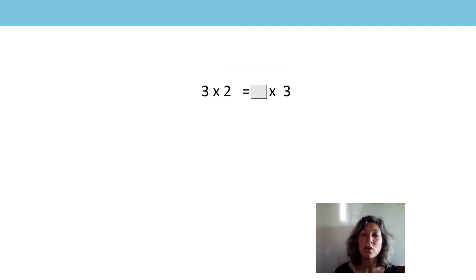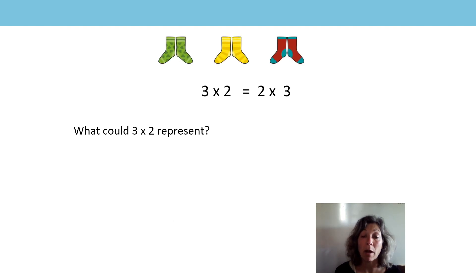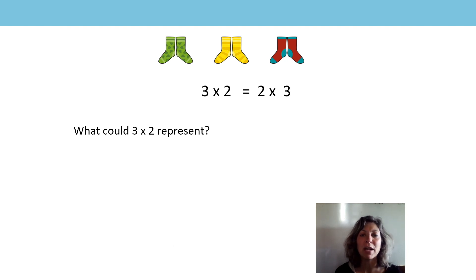Now let's look at how we can use what we've learnt to find a missing number. So I've got three twos. Three twos is equal to two three times. What could three twos represent? It could represent socks — three groups of two socks, two socks three times.